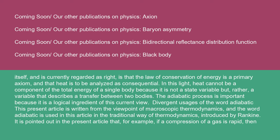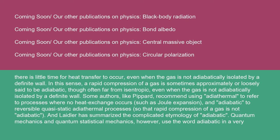Divergent usages of the word 'adiabatic': this article is written from the viewpoint of macroscopic thermodynamics, and the word adiabatic is used in the traditional thermodynamic sense introduced by Rankine. If a compression of a gas is rapid, there is little time for heat transfer to occur, even when the gas is not adiabatically isolated by a definite wall; in this sense, a rapid compression is sometimes approximately said to be adiabatic, though often far from isentropic. Some authors, like Pippard, recommend using 'adiathermal' to refer to processes where no heat exchange occurs (such as Joule expansion), and 'adiabatic' to reversible quasi-static adiathermal processes, so that rapid compression of a gas is not adiabatic. Laidler has summarized the complicated etymology of adiabatic.